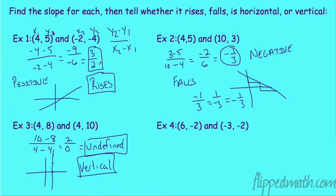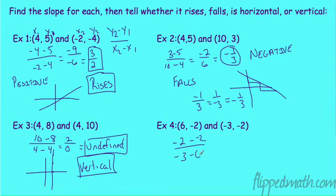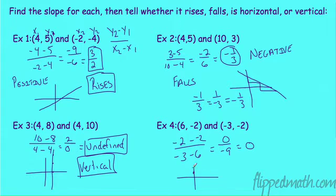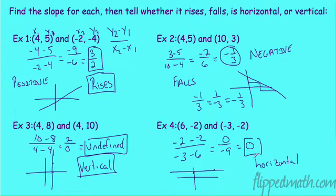You need to understand: if the slope is positive, the line always rises to the right. If it's negative, it always falls to the right. If it's undefined, it's always vertical. Now: negative 2 minus negative 2 over negative 3 minus 6 gives 0 over negative 9, which equals 0. Going up/down 0 but over 9 — that's a horizontal line. Anytime the slope is 0, the line is horizontal.